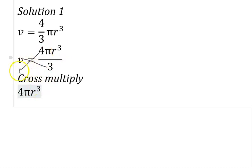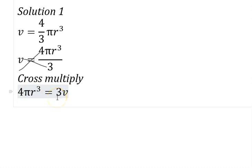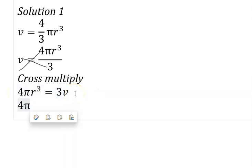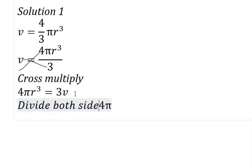So 4πR³ multiplied by 1 still gives you 4πR³, and V times 3 gives you 3V. Now our aim is to make R stand alone. What is disturbing R is this 4π. Let's iron that out — we are going to divide both sides by 4π.